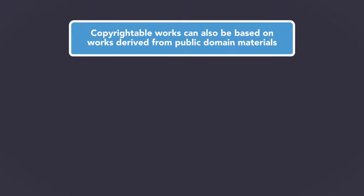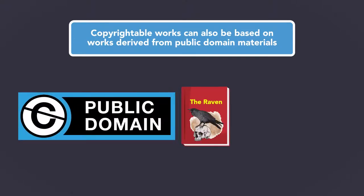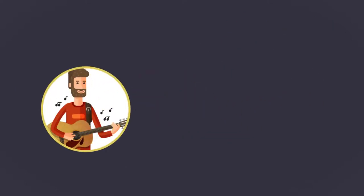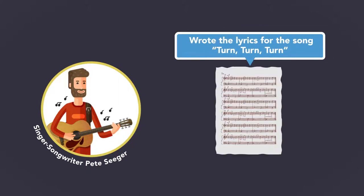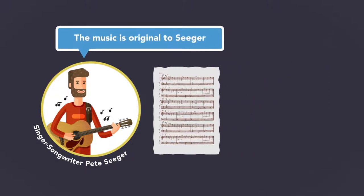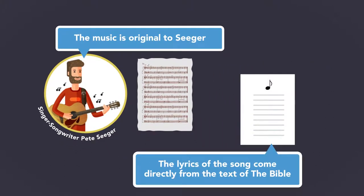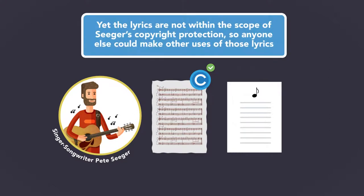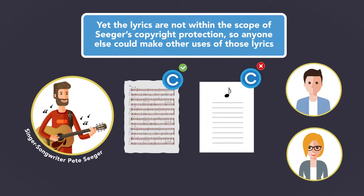Copyrightable works can also be based on works derived from public domain materials. Here, copyright protection applies only to the new material, not the public domain material upon which the new work was based. For example, singer-songwriter Pete Seeger wrote the lyrics for the song "Turn Turn Turn," made popular by the American band The Byrds. The music is original to Seeger; however, the lyrics come directly from the text of the Bible. The entire song is copyrightable to Seeger along with the music, yet the lyrics are not within the scope of Seeger's copyright protection, so anyone else could make other uses of those lyrics.